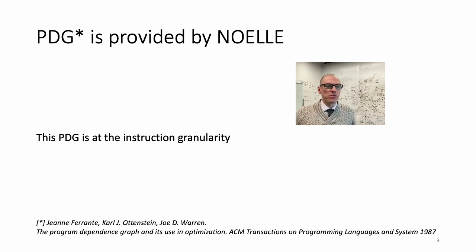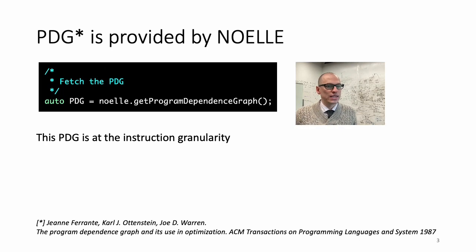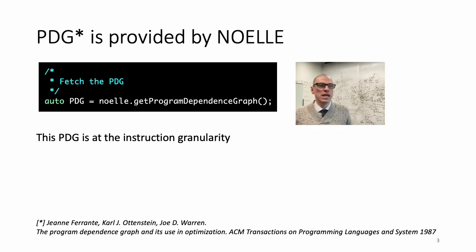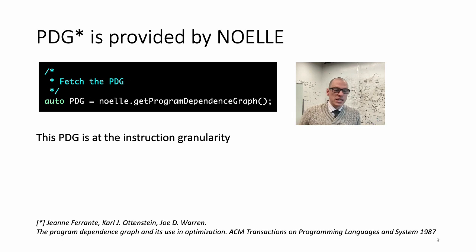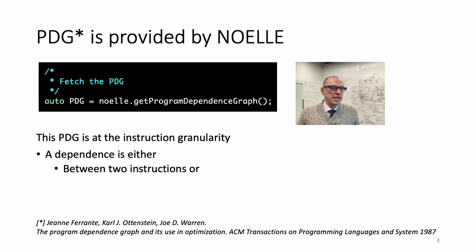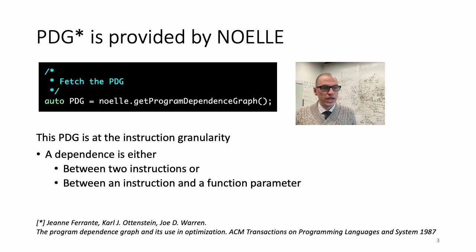So the PDG is provided by Noelle, and to access it for the granularity of single instructions — in other words, a dependence is a binary relation between two instructions — then you can do it from the Noelle object, which you can obtain using the code that I have in my previous talk. From that object, there is an API called GetProgramDependenceGraph, and what it returns is the dependence graph of the entire program. A dependence is either between two instructions or between an instruction and a function parameter.